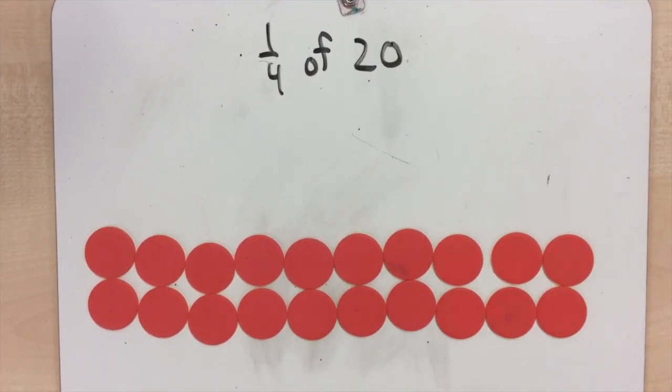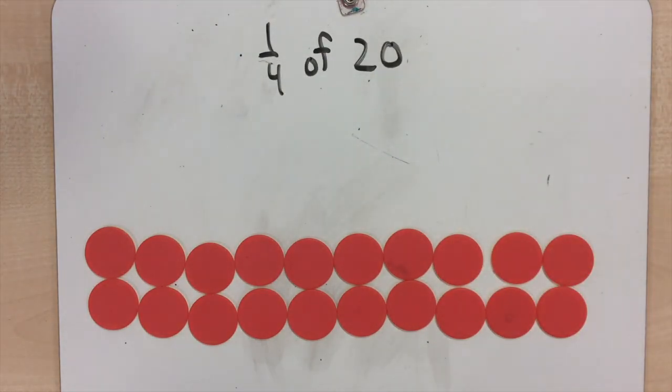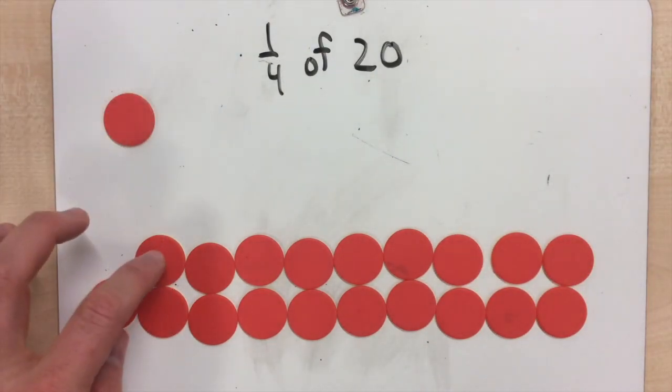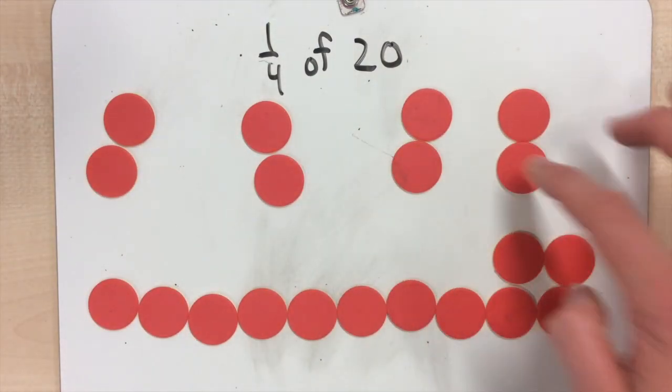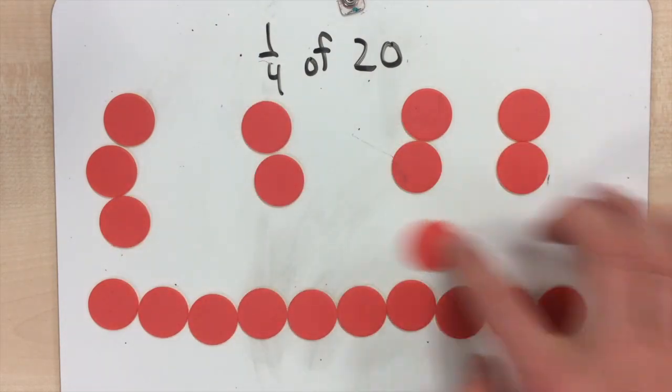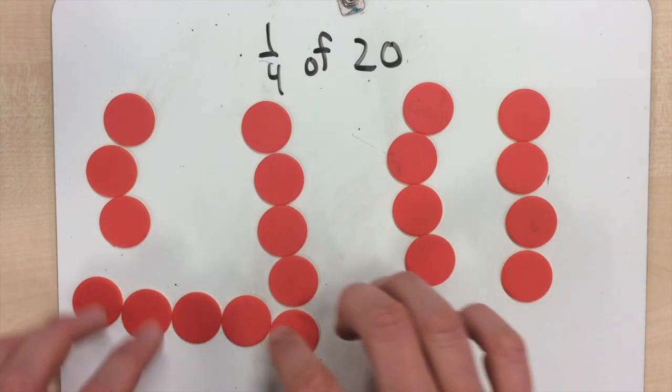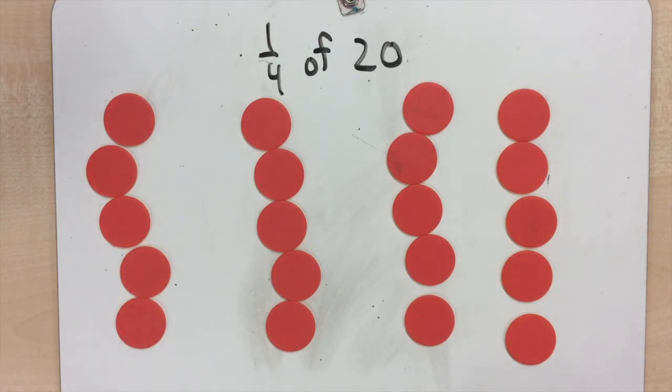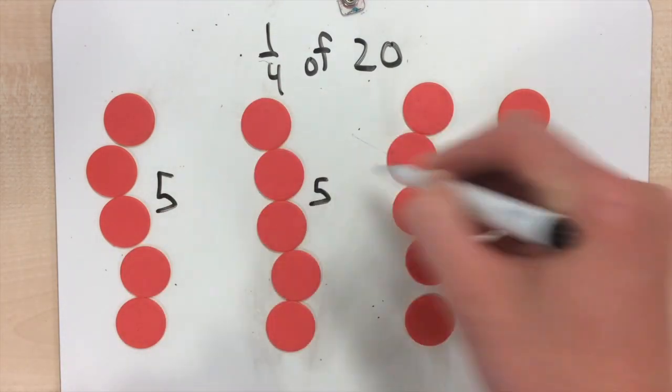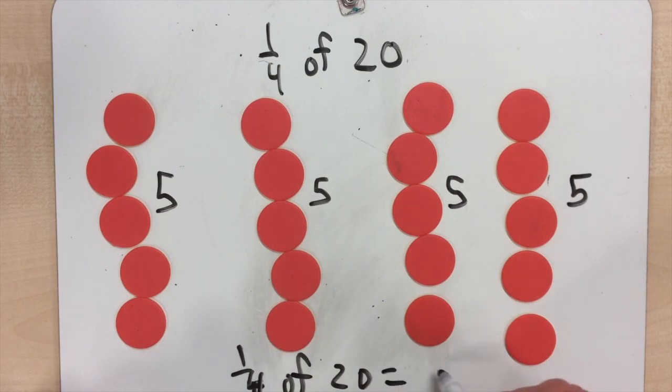Let's try quarters again for our last problem. 1 quarter or 1 fourth of 20 means 4 groups. So 1, 1, 1, 1, 2, 2, 2, 2, 3, 3, 3, 3, 4, 4, 4, 4, 5, 5, 5, 5. So each of our groups has 5 in it. So 1 quarter of 20 equals 5.